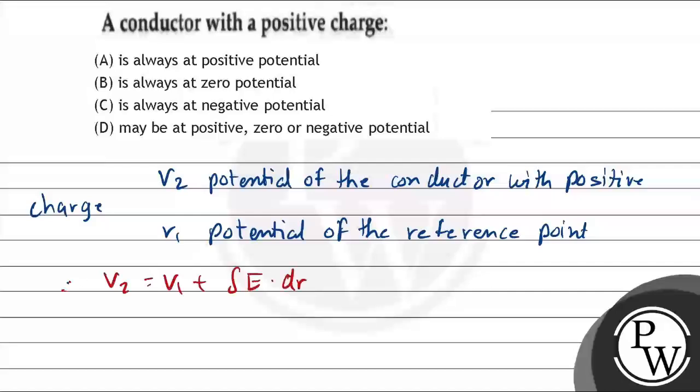Correct. So we have our V2. Now we have to see three conditions: if V1 is equals to minus integral E dot dR, we have V2 equal to 0.